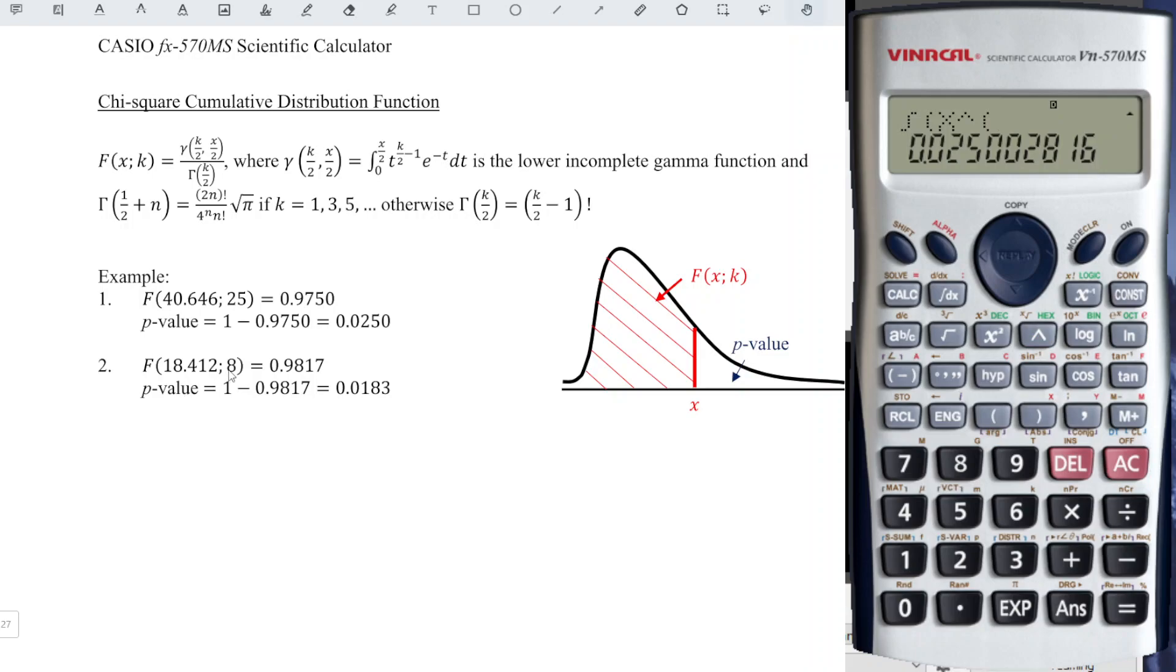So for this case, k is equal to 8. So we have 8 over 2 minus 1 close bracket. And we times shift ln to get e power bracket negative x close bracket. Put comma before we have the lower limit 0, comma,